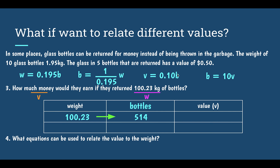Now that I know the bottles, I can use the third equation. I know the bottles and I want to figure out the value, so I would multiply by 0.10 — 10 cents. My value is $51.40.